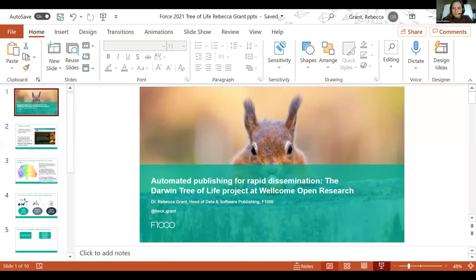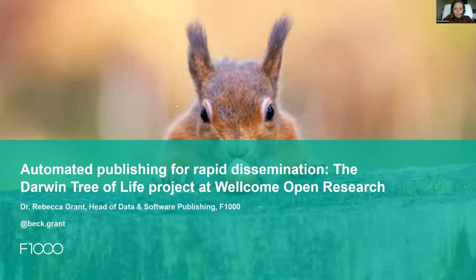Please use Q&A for questions for Rowan, and he'll answer them. Our next speaker is Rebecca Grant from F1000, and she'll talk about automated publishing for rapid dissemination — the Darwin Tree of Life project at Wellcome Open Research. Over to you, Rebecca.